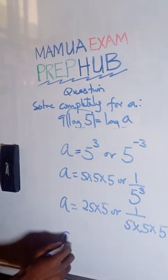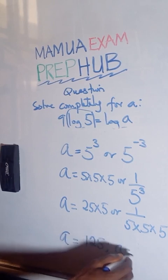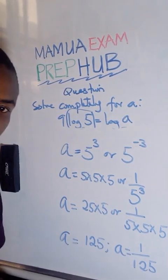So our answers are: a equals 125, or a equals 1 over 125. That is the answer.